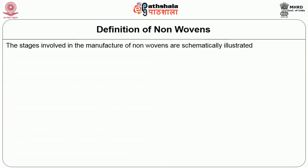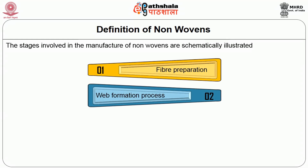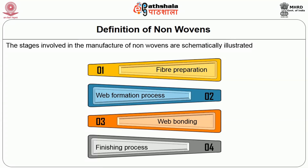The stages involved in the manufacture of nonwovens are schematically illustrated in Figure 1. They basically constitute the following stages: the first is the fiber preparation, then the web formation. There are different techniques in web formation such as the dry-laid system using cards or the air-laid system, then we have the wet-laid system, then we have the polymer-based system where it could be spun bonding or melt blowing. After the formation, the next stage is the web bonding and finishing process.